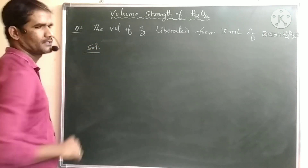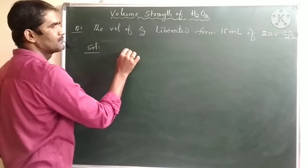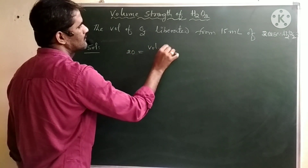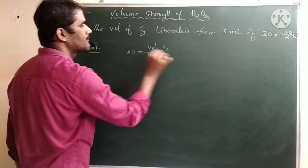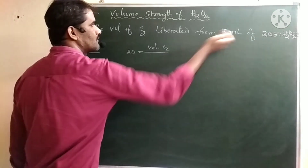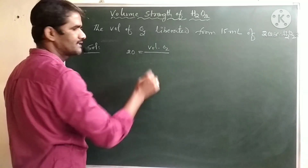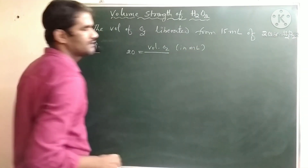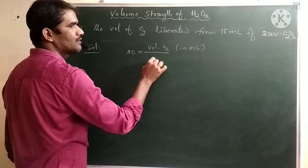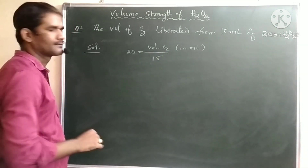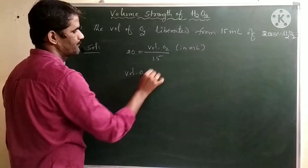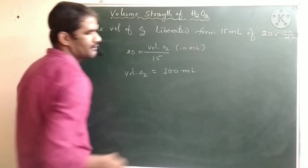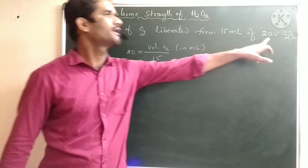The formula is the same; we just do the reverse calculation. Volume strength = volume of oxygen liberated / volume of H2O2. So: 20 = volume of O2 / 15 mL. We can work in milliliters directly: volume of O2 = 15 × 20 = 300 mL. So 300 mL of oxygen will be liberated from 15 mL of 20V H2O2.